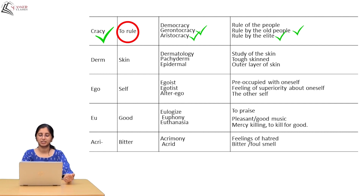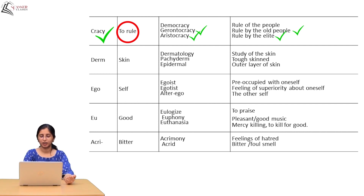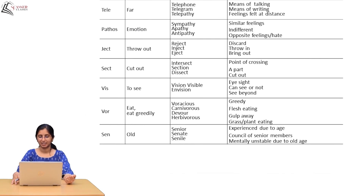The root 'acri' means bitter. Acrimony means feelings of hatred. Acrid means a bitter or foul smell. This is the root — the word is formed from it. If the root means bitter, the meaning of the word derived from it will also carry bitterness. You can understand the word's meaning from this.